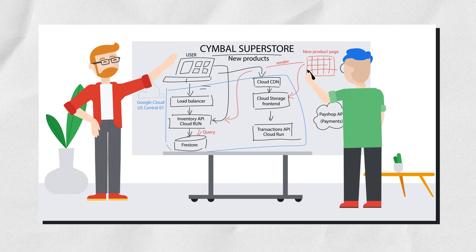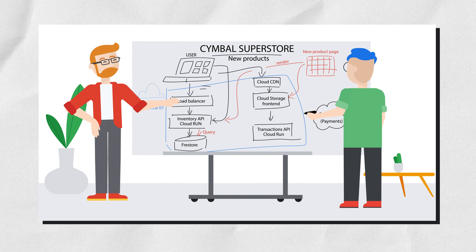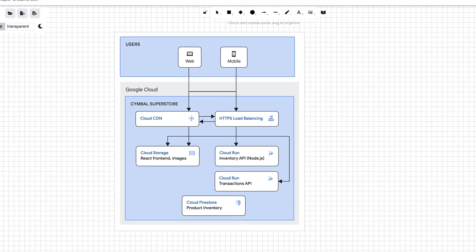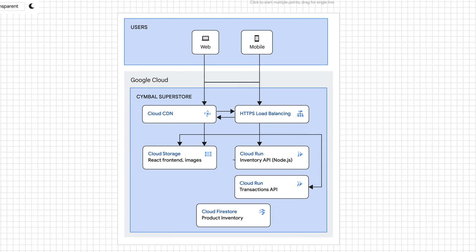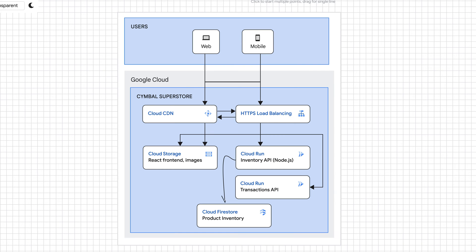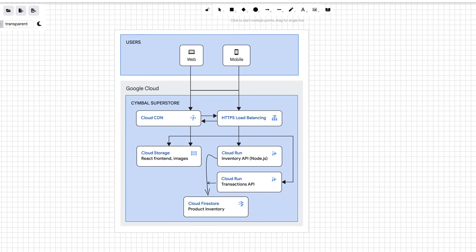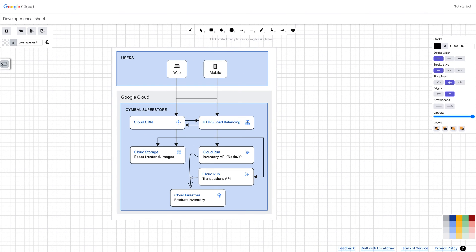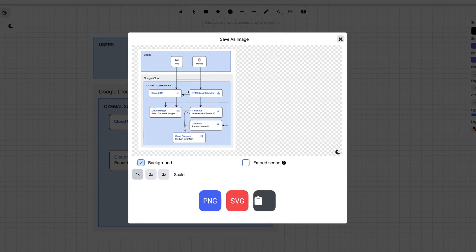The next morning, I get together with my teammate and we start brainstorming the implementation of the new products page in a whiteboard session. After the meeting, I jump into the architecture diagram tool and use it to clean up the messy whiteboard image into something easier to read that I can share with my team, and then save it as an image right here in the tool.